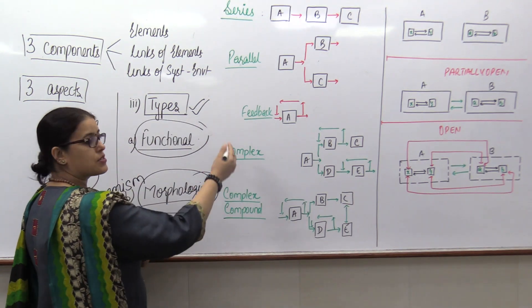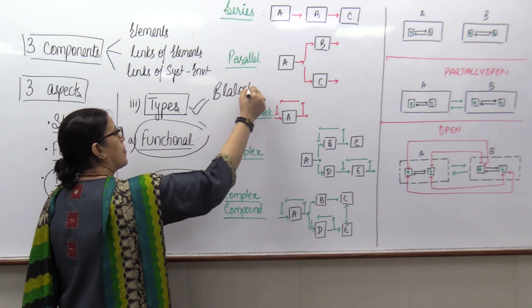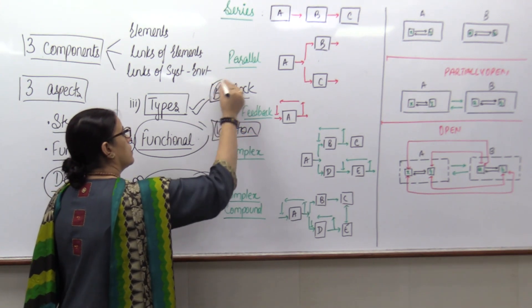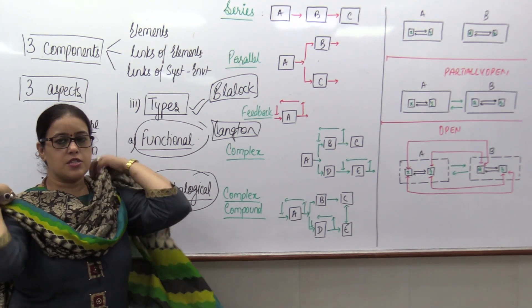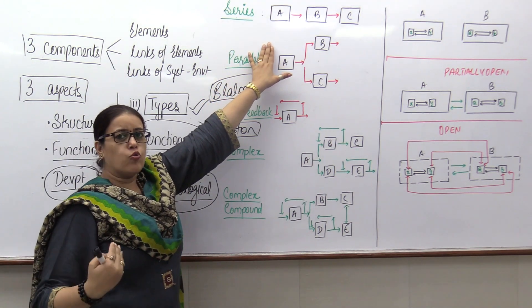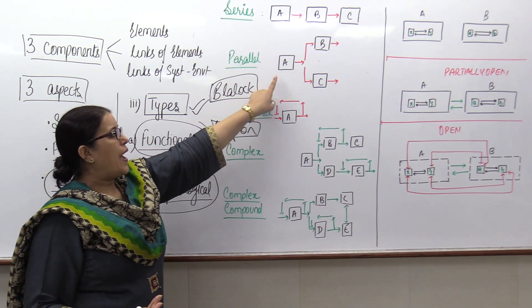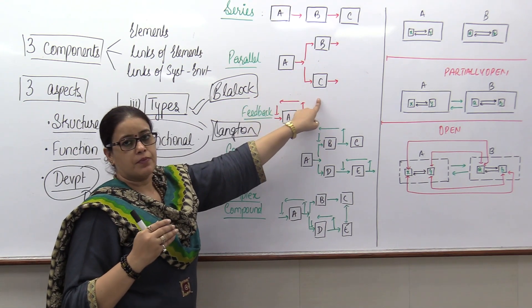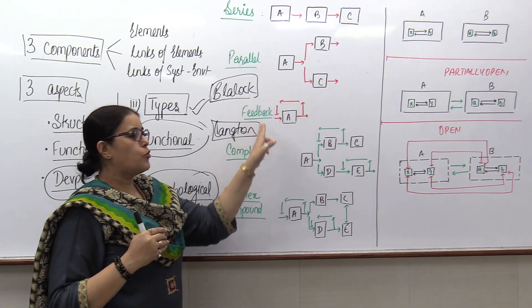And these systems are credited to Chorley and Kennedy like scholars. If I have to take the reference of these systems, I am picking up the contribution of Belloc, Chorley and also Langton. Now functional system includes one series or sequential system. Output of one becomes input of other. Parallel system. Output of one becomes input of more than one system. Feedback system. Output of one can become input of the same system.